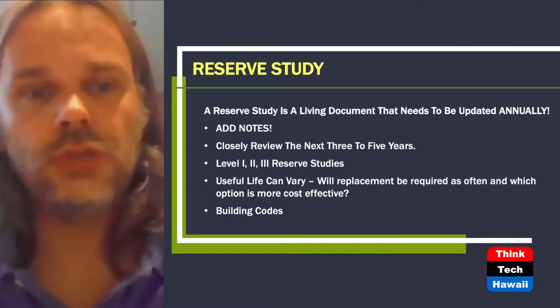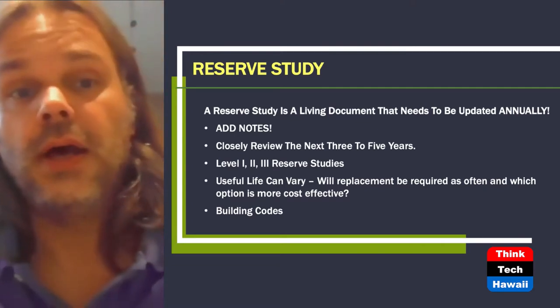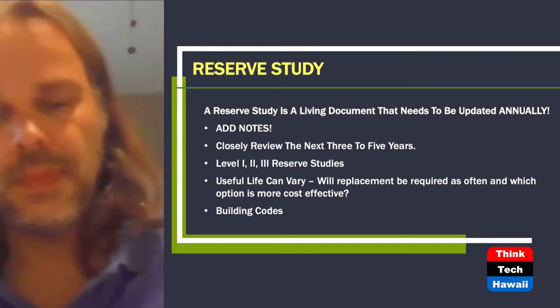A Level 3 reserve study is essentially done on an annual basis, and most associations are performing Level 3. It is a simple update — you are looking at your beginning balances, reserve contribution, interest income, and inflation rate. It is just updating numbers: what was completed, what was not completed. A reserve study needs to be updated on an annual basis because things change — pricing changes, building codes change, labor costs change, material costs change. There are many changes that occur over the life of a reserve study.